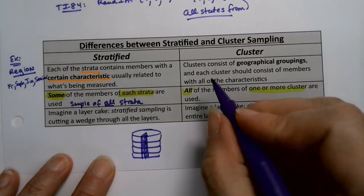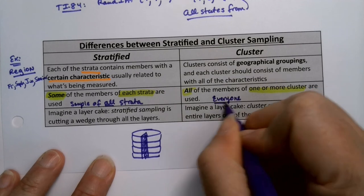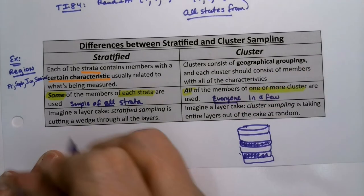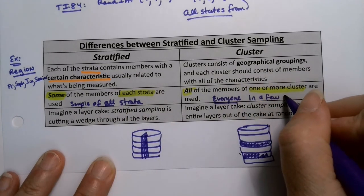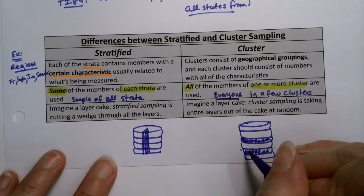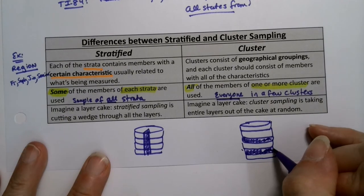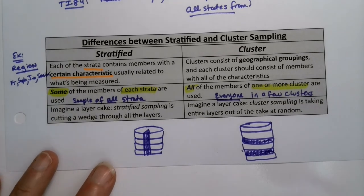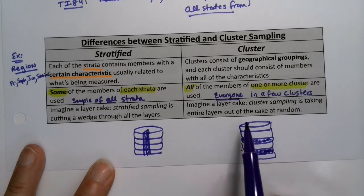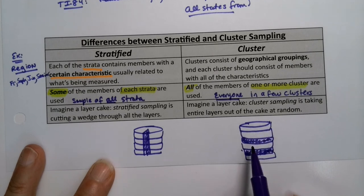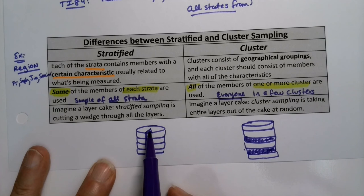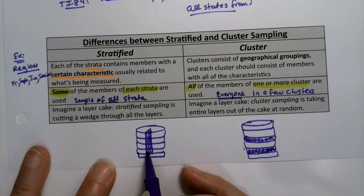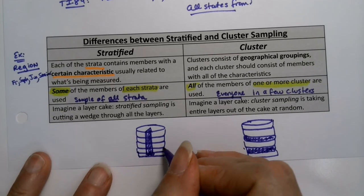They're like opposites of each other. This is everyone in a few clusters, as opposed to a few from each strata. You take whole layers out of the cake and eat them, but you leave the rest alone — so you never know what the top layer tastes like because you never sampled it. Suppose these were hospitals — you grab a few hospitals and pull all their data, versus taking, say, the neonatal unit from every single hospital in Michigan. Both can be valid depending on what you're trying to conclude.